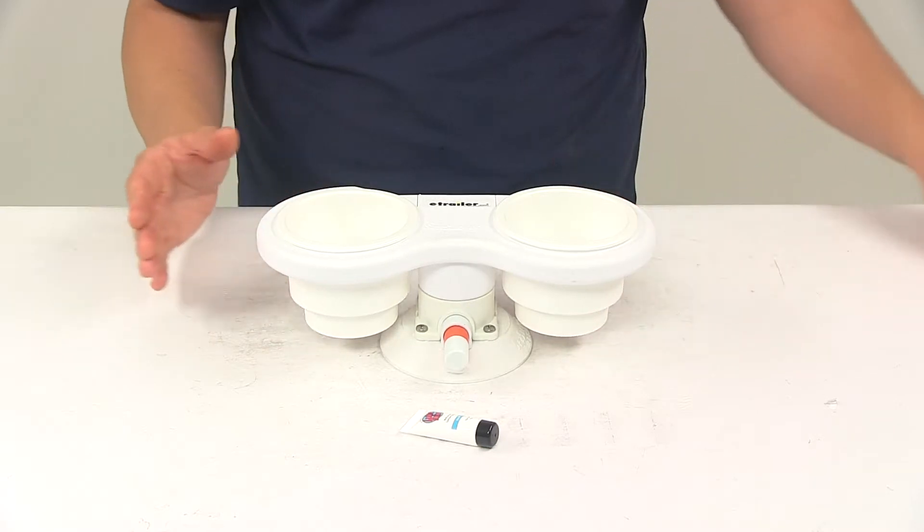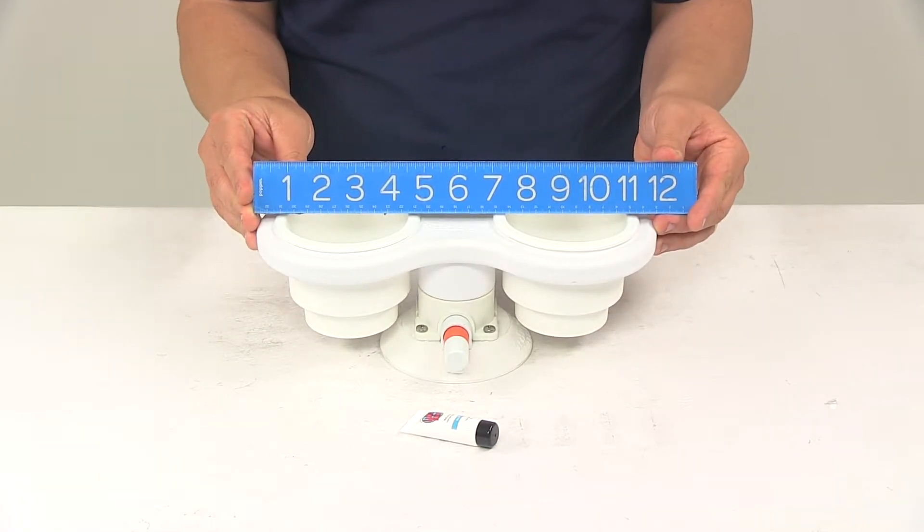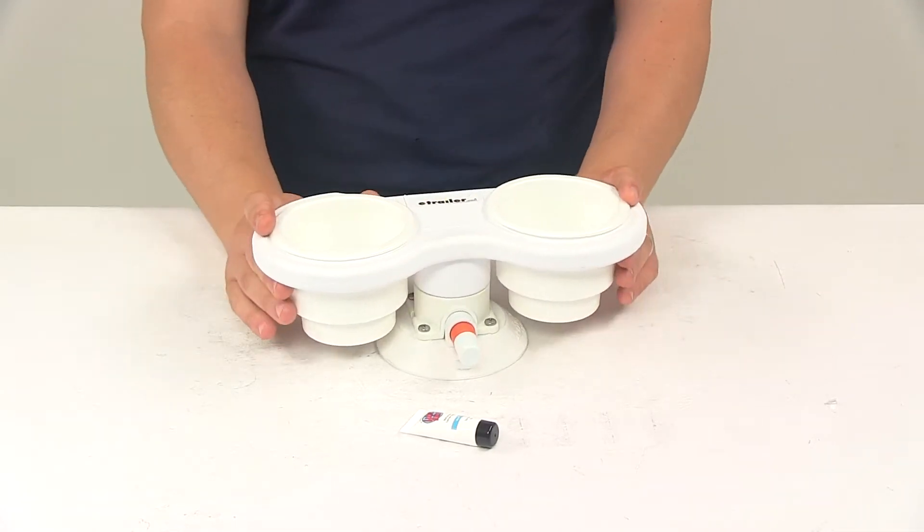Taking a measurement from edge to edge of the unit, it measures about 11.75 inches. The overall height from the mounting surface with it fully installed is about 4 inches tall.